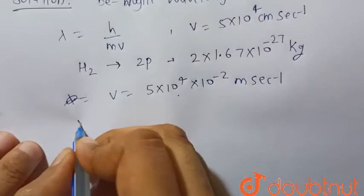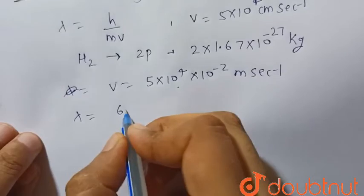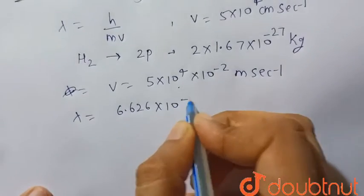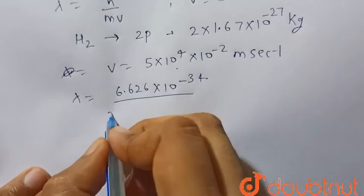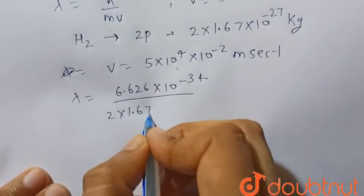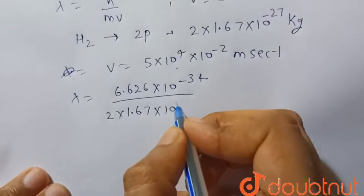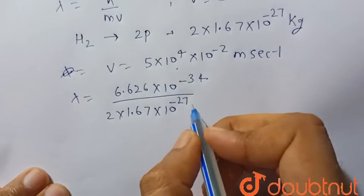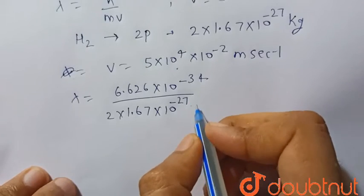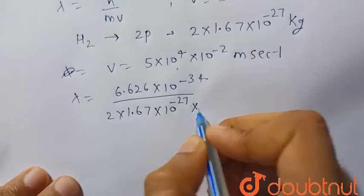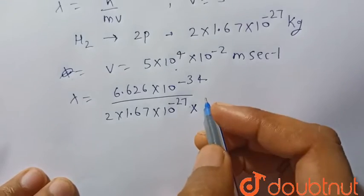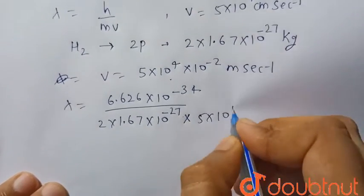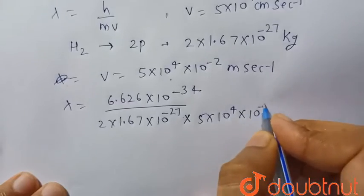Now put this value in the equation. Lambda equals h, the Planck constant whose value is 6.626 × 10^-34, divided by mass which is 2 × 1.67 × 10^-27, and velocity is 5 × 10^4 × 10^-2 meter per second.